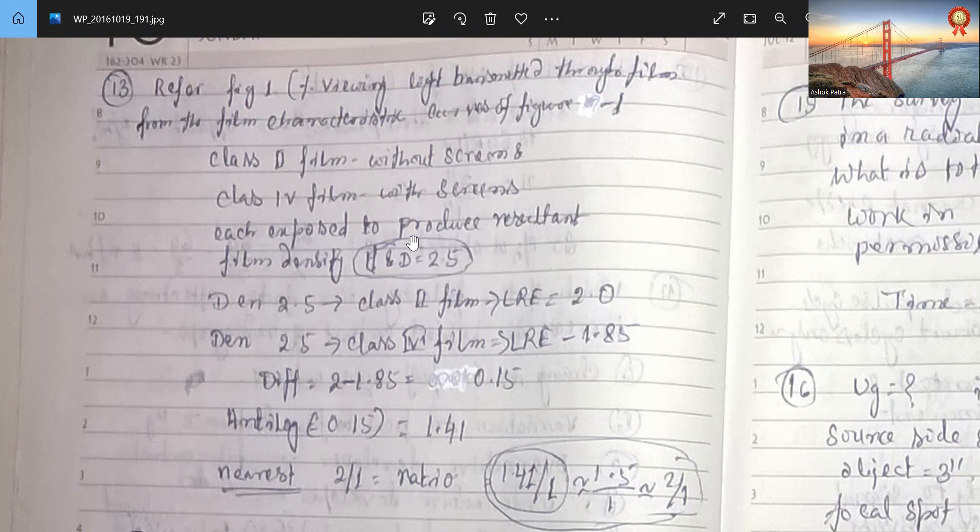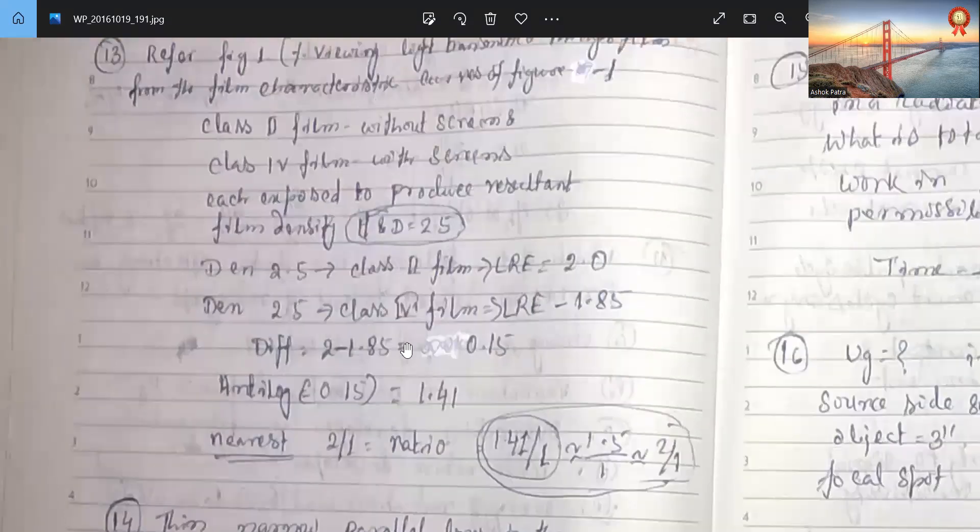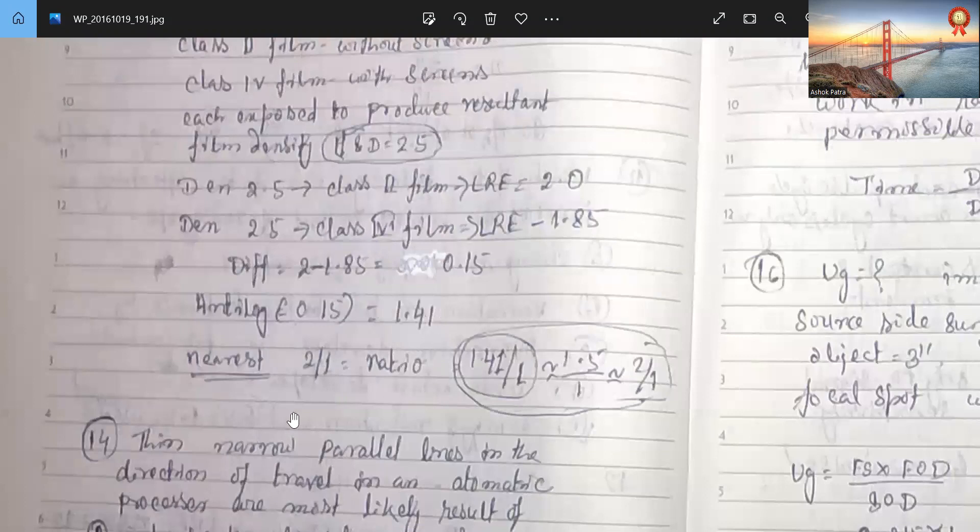So film density to 2.5. Density 2.5. Class 2 film. LRE 2.5 is 1.85. Difference is 0.15. Antilog of this, and the nearest ratio is 2 is to 1.